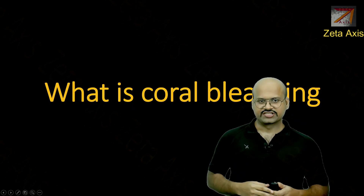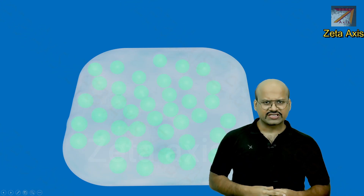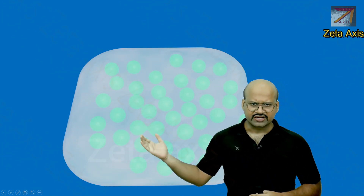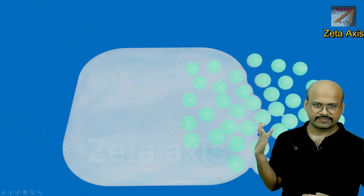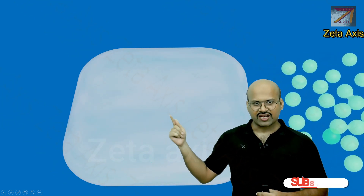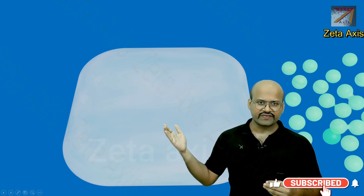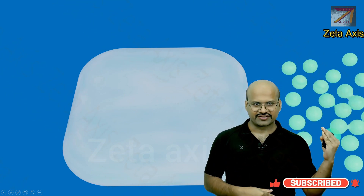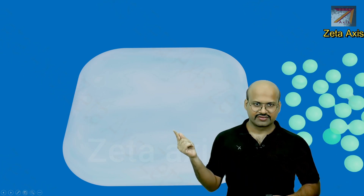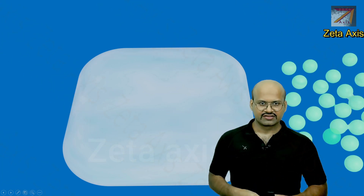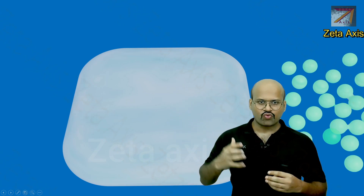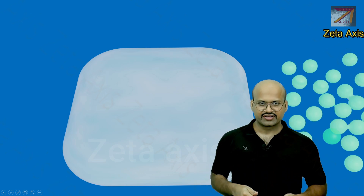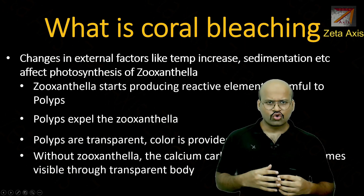Now let's see what coral bleaching is. Coral bleaching is a situation when these cells emit their pigmentations out, and the coral becomes colorless. The cells do not have their own color — they are translucent or transparent. It is the pigmentation which provides them color. Since these pigments are released, the color becomes white because we can now see the calcium carbonate substrate. This condition is called coral bleaching.